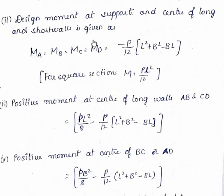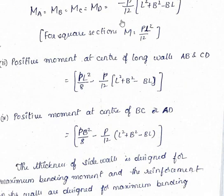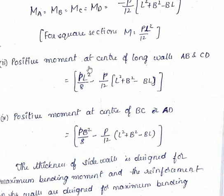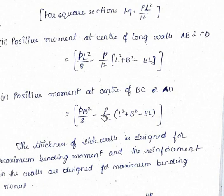Design moment at the supports and center of long walls and short walls: at the supports, the formula is M = (P/12) × (L² + B²) − EBL. At the center of long walls (AB and CD), the positive moment formula is P×L²/8 − (P/12) × (L² + B²) − PL. The positive moment at the center of short walls has its own formula. All parameters — P, L, B — are known.